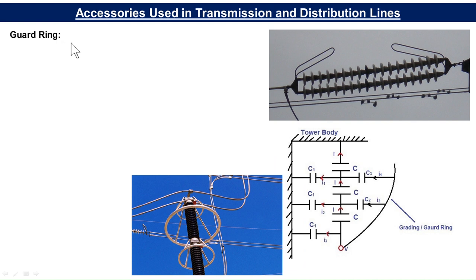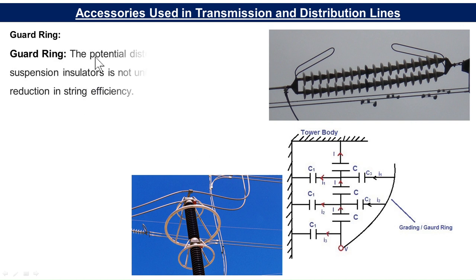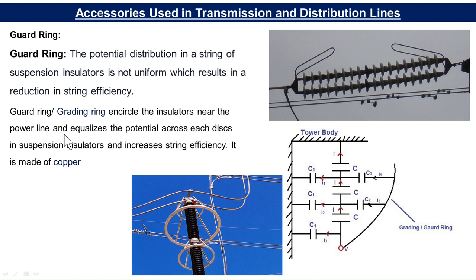Then there is the grading ring. These are grading rings used in transmission lines, and these are grading rings used in substations. The potential distribution in a string of suspension insulators is not uniform, which results in a reduction in string efficiency. The grading ring encircles the insulators near the power line end and equalizes the potential across each disc in the suspension insulator, thereby increasing the string efficiency. It is made of copper. You may have studied string efficiency problems in your BTEC diploma course.